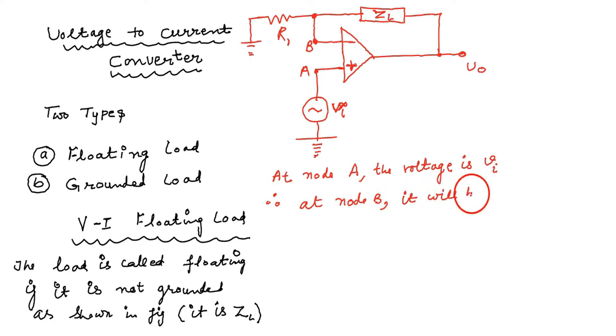This is the characteristic of the op-amp, that whatever the voltage at A the same will be at B. Because the voltage at A is VI, therefore the voltage at B will also be VI.